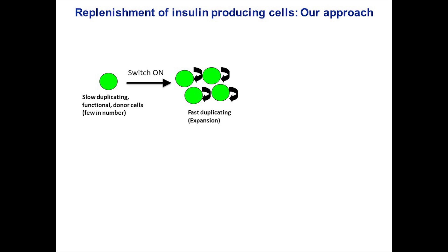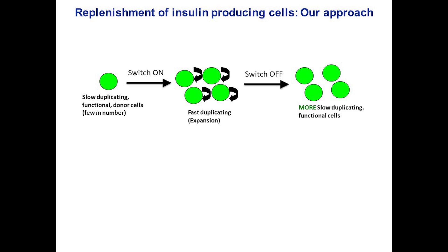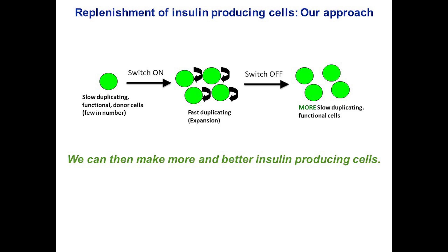What we are trying to do in my laboratory is to first make these cells duplicate fast so that we can get sufficient numbers, and then guide these cells to stop duplicating fast and start functioning. We have now identified a molecular switch — when this switch is on, it makes the cells divide, and when it's turned off, it sets off a program for proper function of these insulin-producing cells.